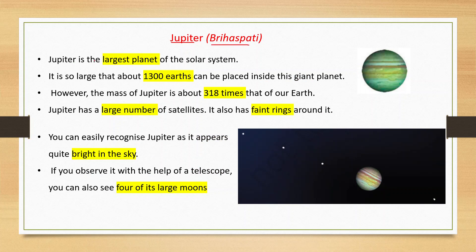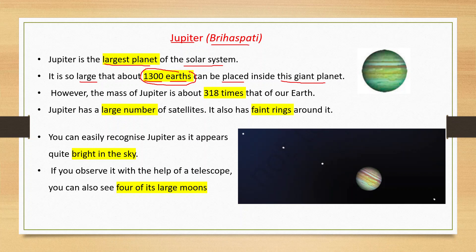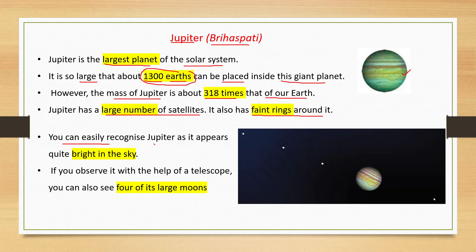Jupiter is the largest planet of the solar system. It is so large that about 1300 Earths can be placed inside it. The mass of Jupiter is about 318 times that of our Earth. Jupiter has a large number of satellites and also has faint rings around it. It is quite bright in the sky, and if observed with a telescope, you can see four of its large moons.